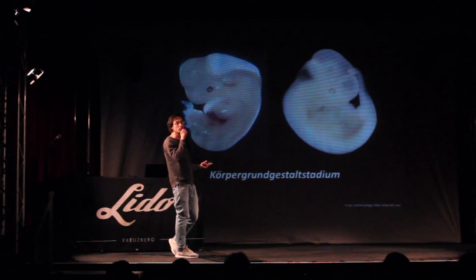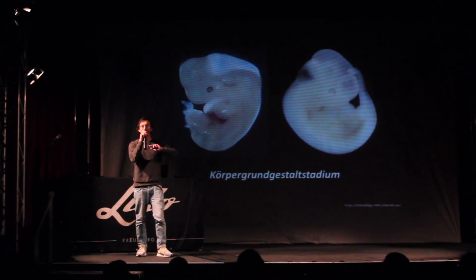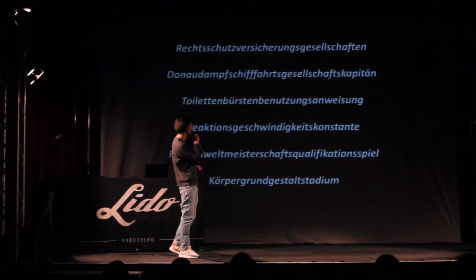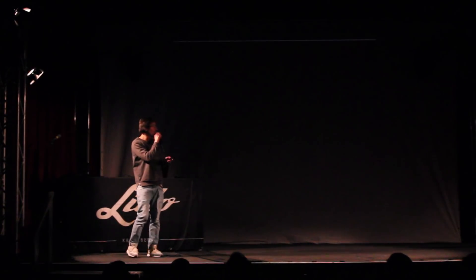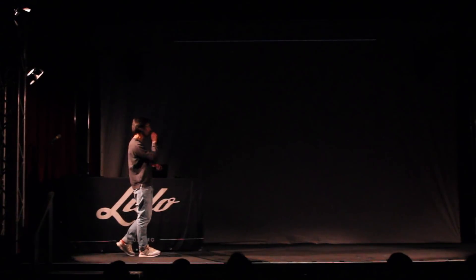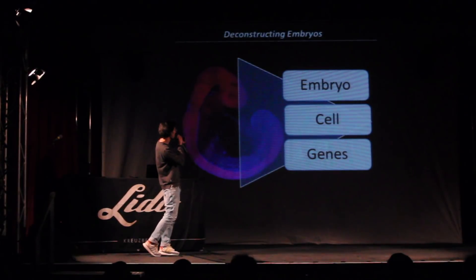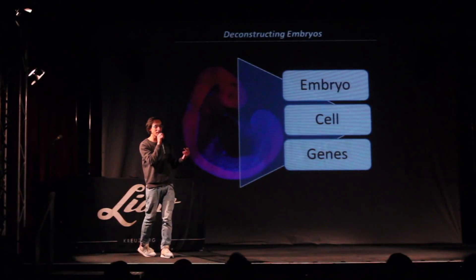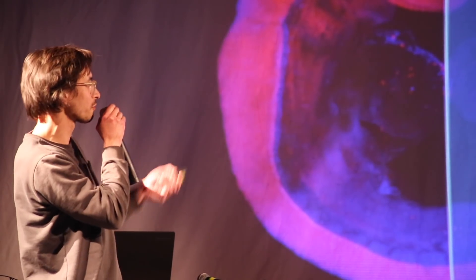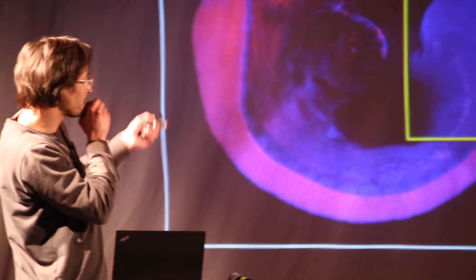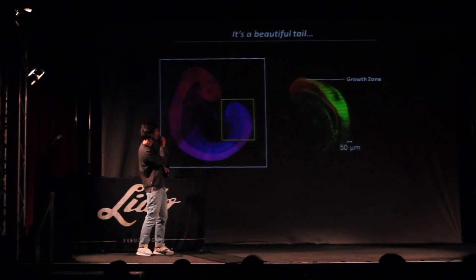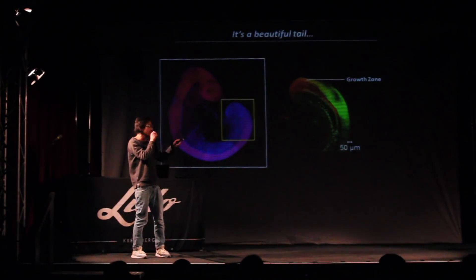Now, to get to this stage is so complex that we actually came up with a German word for it: Körpergrundgestaltstadium. No worries, I'm not going to pronounce them all. So let's get back to some science — that's what we're here for after all. In the lab, I give these embryos really beautiful colors so I can see them better, and then I look at them at the level of the embryo, the cell, and the genes expressed in a single cell — we really deconstruct the embryo. I'm especially interested in the tail of the embryo, because it still has the growth zone: a small yellow population of cells. It's small but really important — if we take it away, the embryo stops growing and eventually dies.